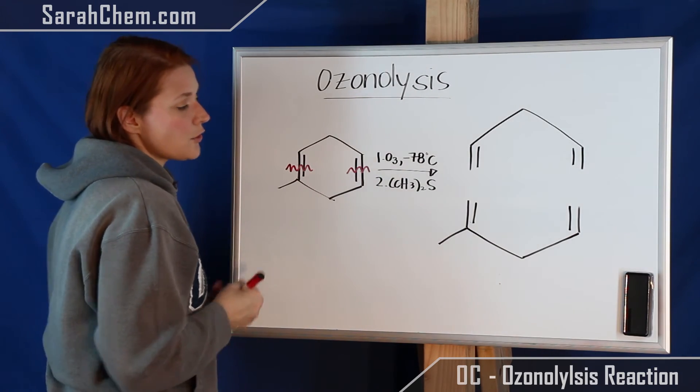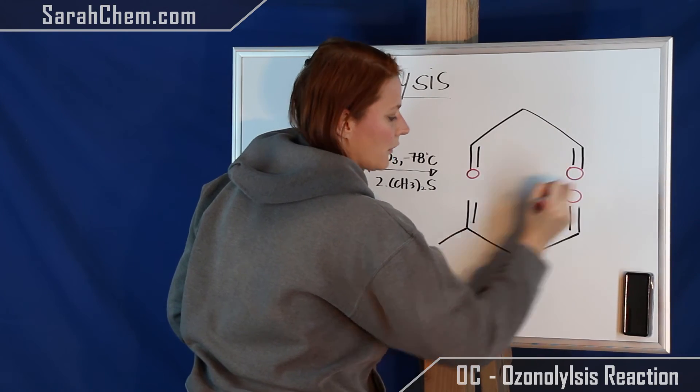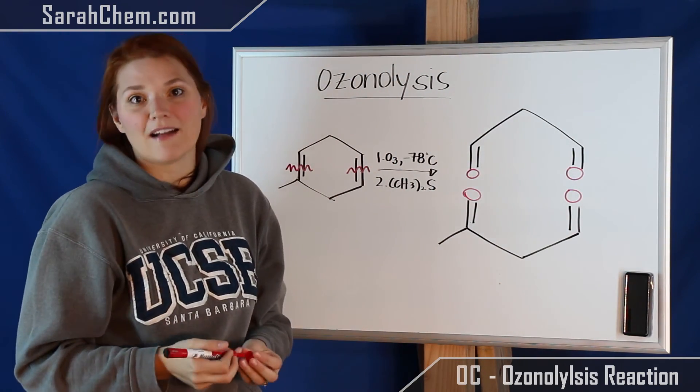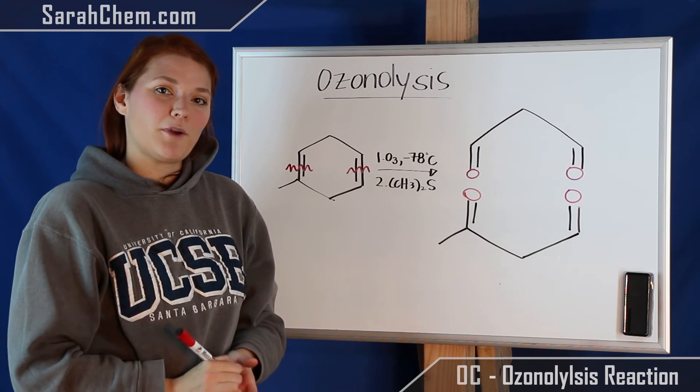The next thing you're going to do is put an O at the end cap of each one of those double bonds there and there. And that's how you're showing that you've made a ketone or an aldehyde. And that's pretty much how you predict product for ozonolysis.